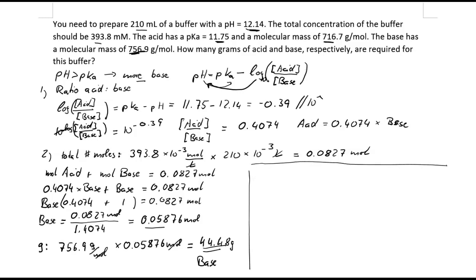Now we calculate the moles of acid. The moles of acid equal the total moles minus the moles of base we just calculated: 0.0827 mol minus 0.05876 mol.